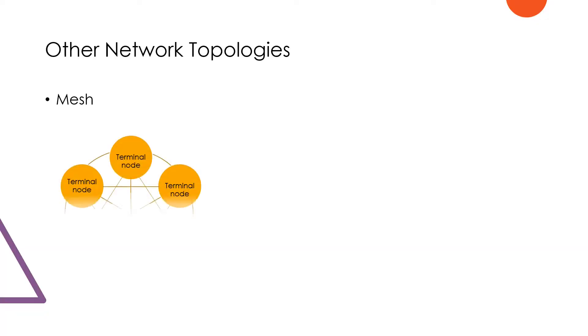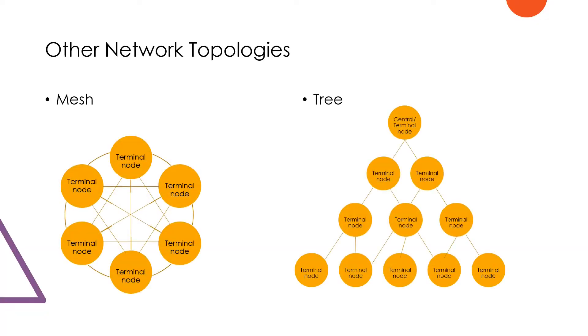These are not the only topologies — they are the basic ones. There are also other network topologies such as the mesh topology, the tree topology, and hybrid topologies that mix both. In a mesh, every terminal node acts like a central node in a star, so every terminal node is connected to all existing nodes. This is common among telecom or service providers who want their central offices interconnected for higher redundancy, higher bandwidth, and higher availability.